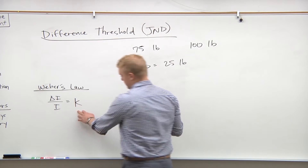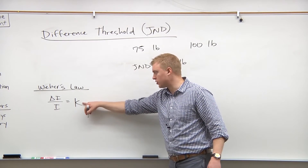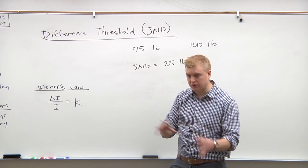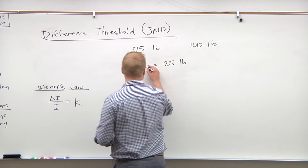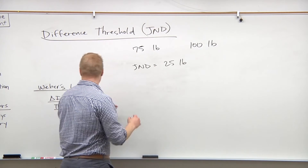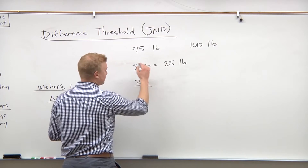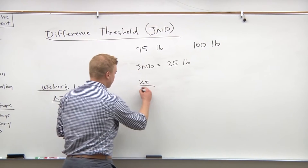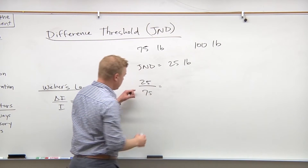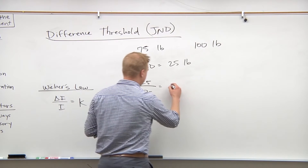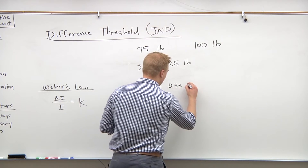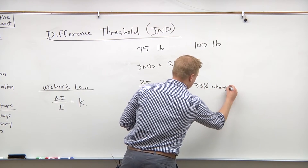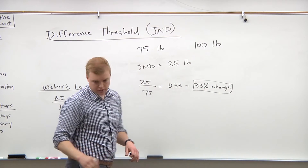If we find Weber's constant, the most important value is the percentage change that he notices — which we would then apply to other haystacks. The JND is 25, the original stimulus was 75, so that gives us a fraction of 0.33, or a 33 percent change.